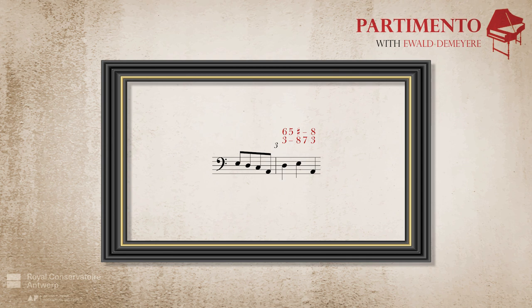Let's have a look now at the cadence in bar 3. When the smallest note values of this partimento are eighth notes, a nice way of realizing this 5-1 cadence is by using a motif that descends a third stepwise — a technique already described in my discussion of Finaroli's first partimento using moti del basso. This motif could start in the upper voice on B and be imitated by the middle voice one beat later, starting on E.